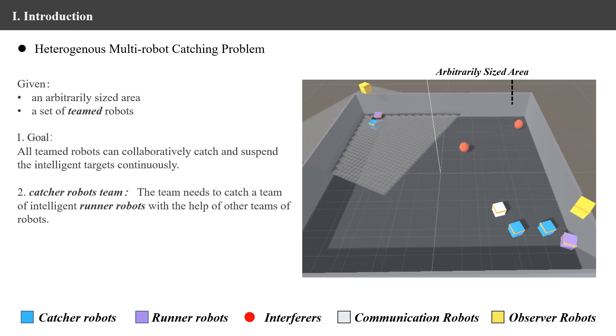We show different objects in this figure: catcher robots, runner robots, interferers, communication robots, and observer robots.